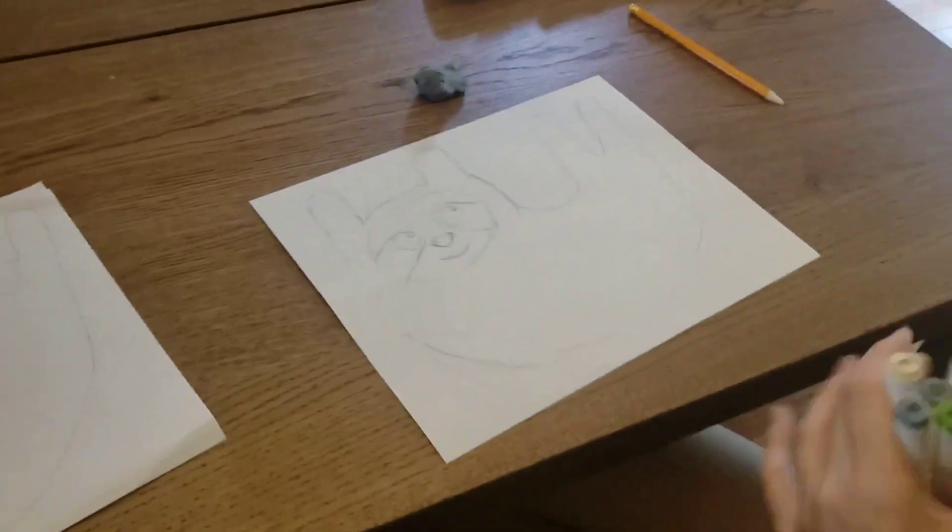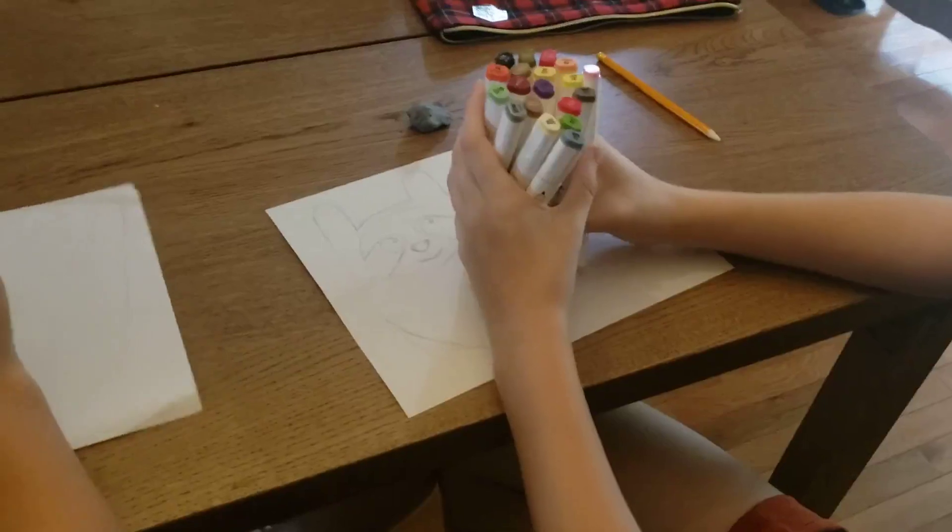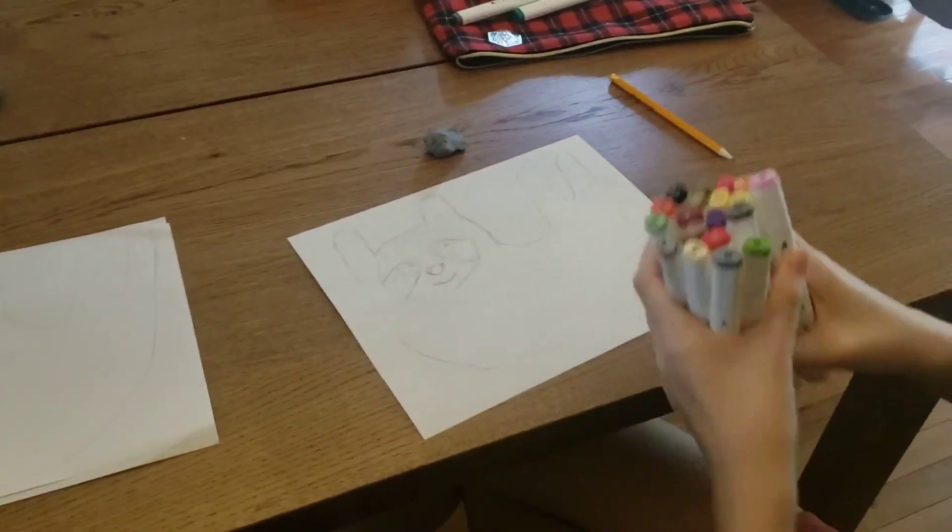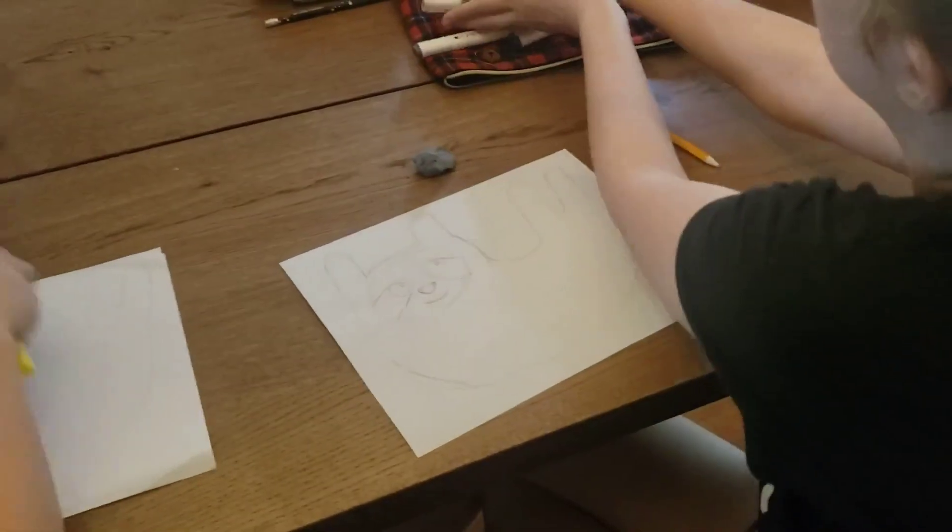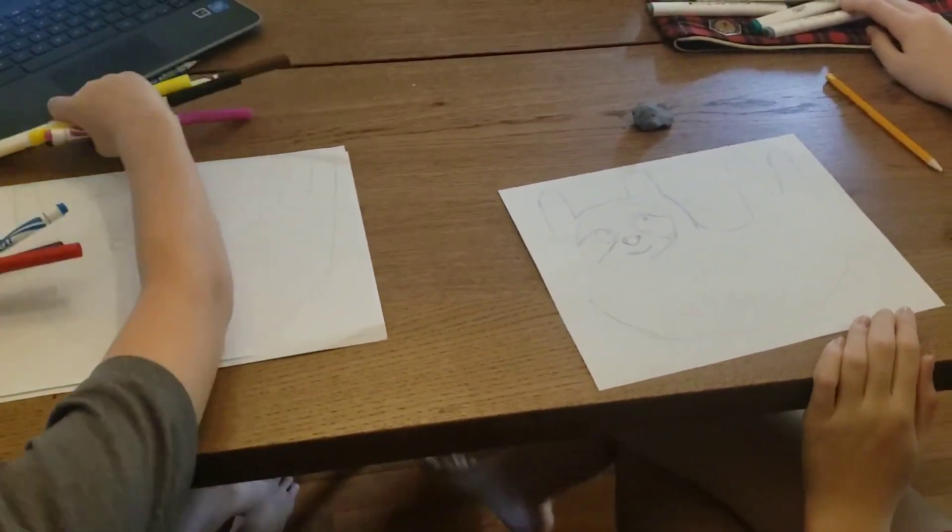Then you get any colors that you have. I have these markers. Finn also has markers, but you can use colored pencils, crayons, whatever you have at home to color this sloth, and you can color however you want.